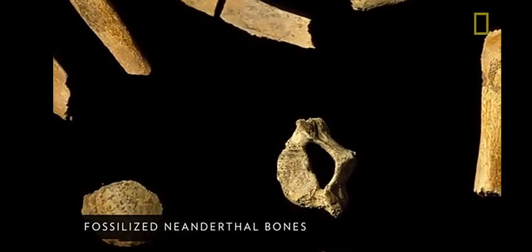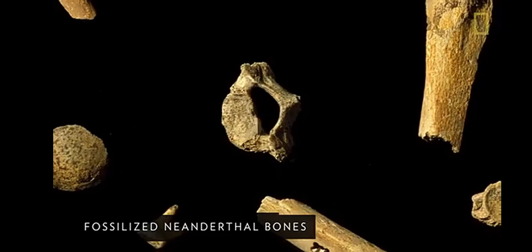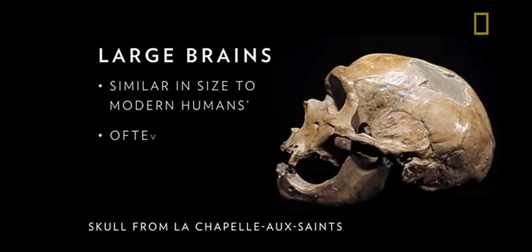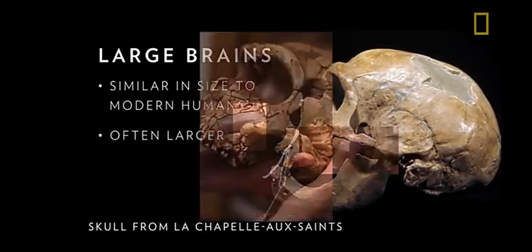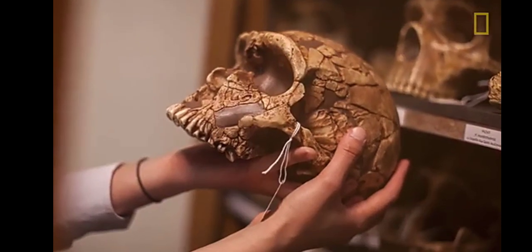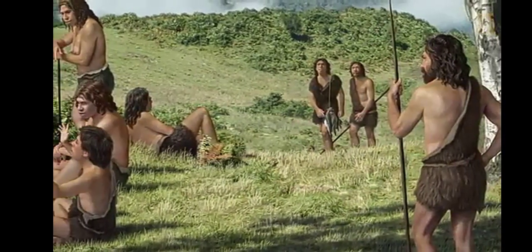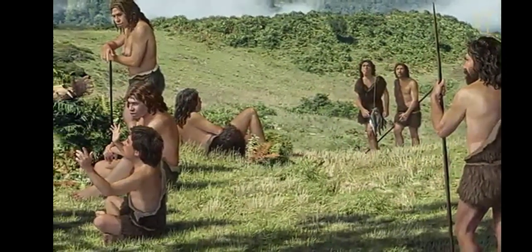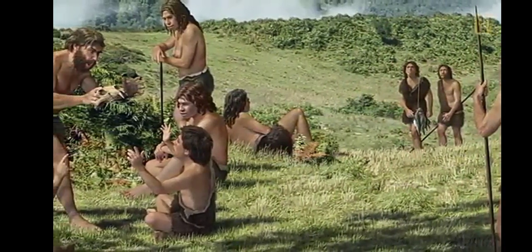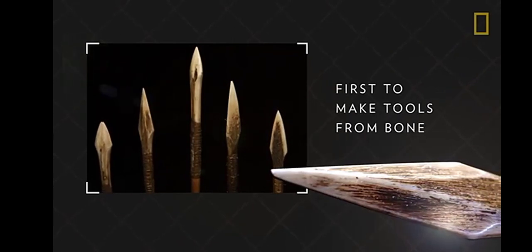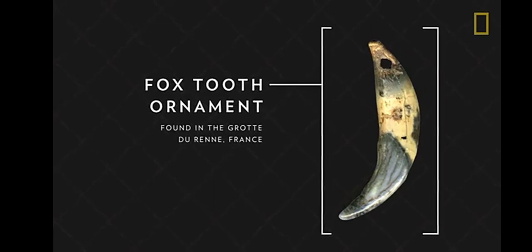Neanderthals also developed large brains, similar in size to modern humans' and often larger. An increase in brain size may have played a significant role in cultural adaptation. Archaeological evidence suggests they had a relatively sophisticated culture — they built shelters, made and wore clothing, and created advanced tools. They were the first human species to make tools out of bone, not just stone, and also created objects that served ornamental purposes.